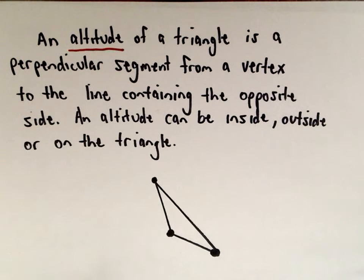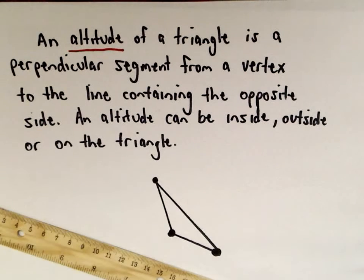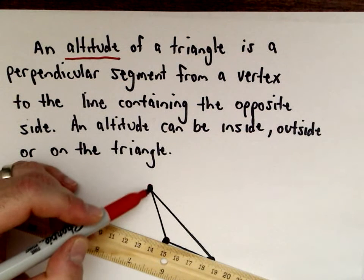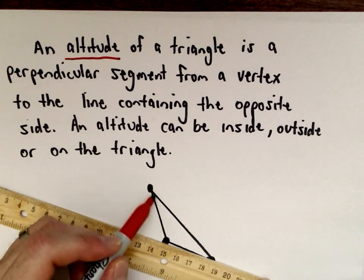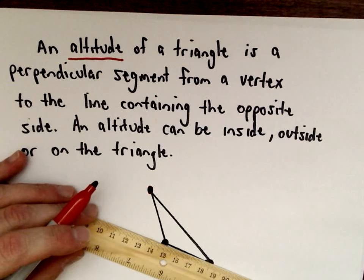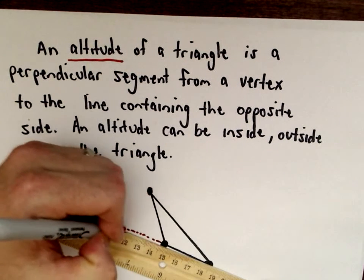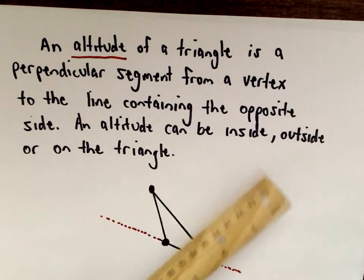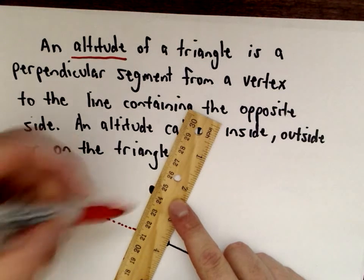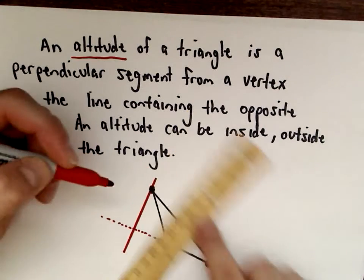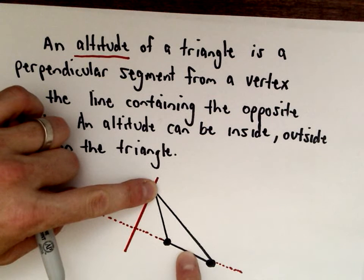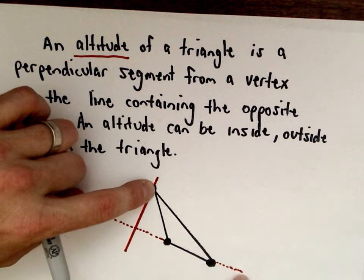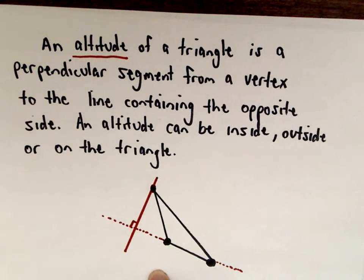Suppose I've got my triangle here — let's make a rough sketch of the altitudes. I'm going to start with my point at the top. This altitude is going to go from this vertex to a line containing the opposite side, so let me extend this line containing the opposite side. I'm going to make a line that's perpendicular to it. So I've got my vertex, I look at the opposite side, extend that line out, and make a line that's perpendicular — that would be one of the altitudes.